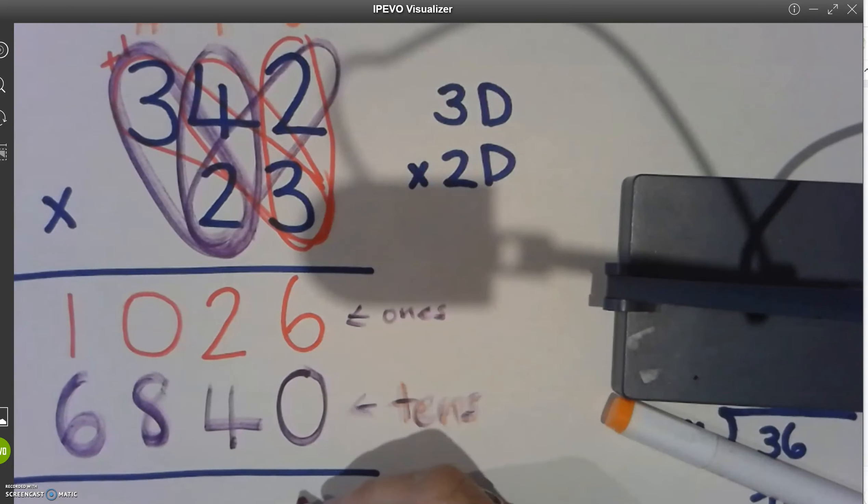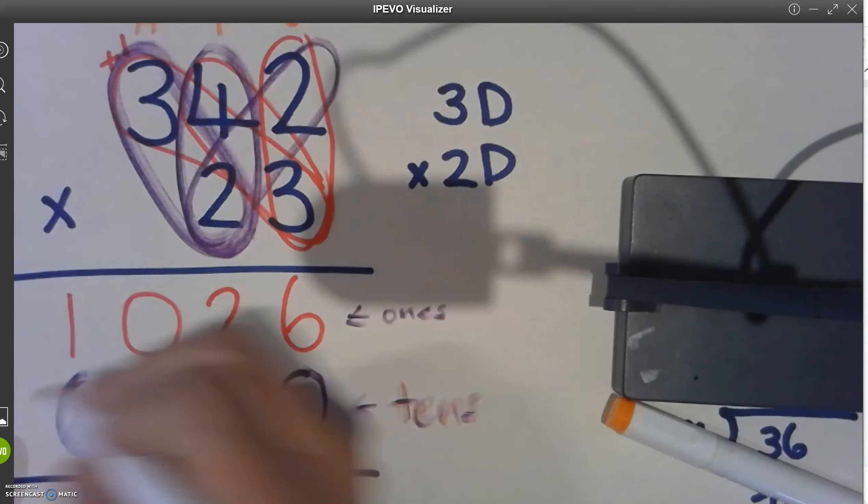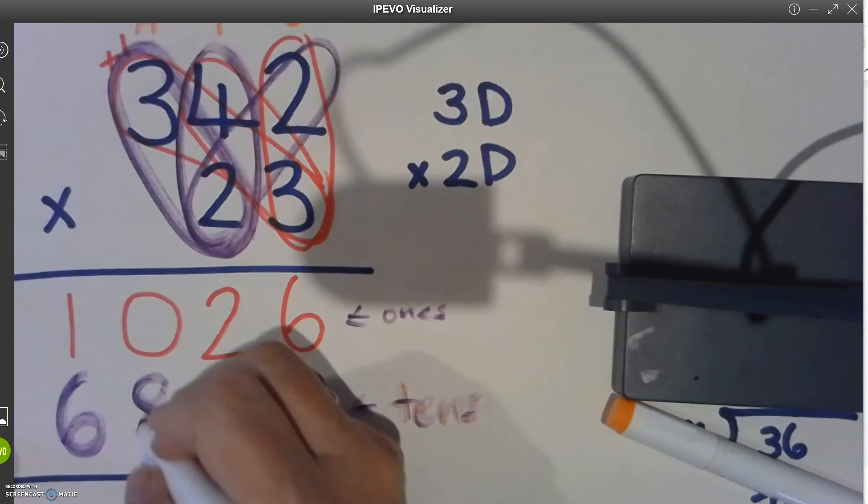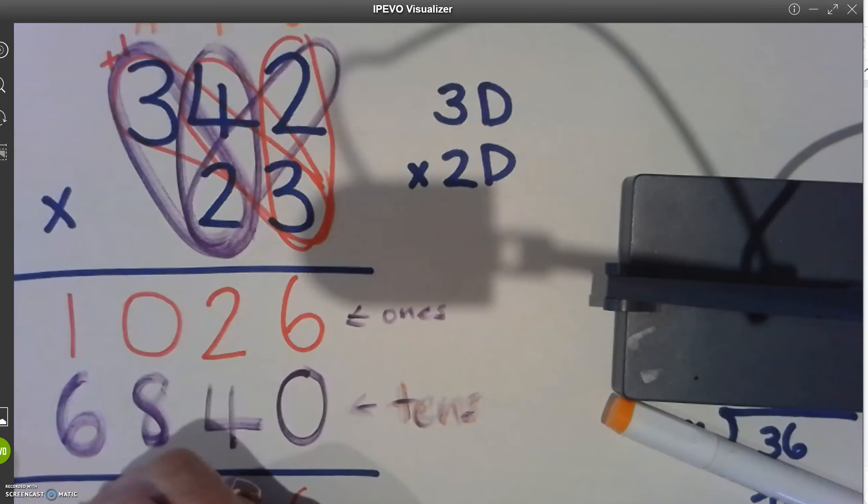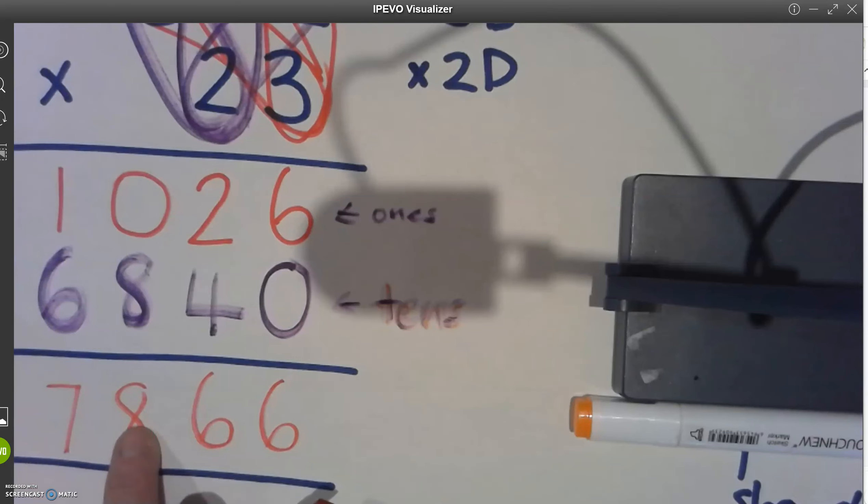So we've got six and zero is six. Two plus four is six. Zero and eight doesn't change eight. One and six is seven. And the answer is seven thousand, eight hundred and sixty six.